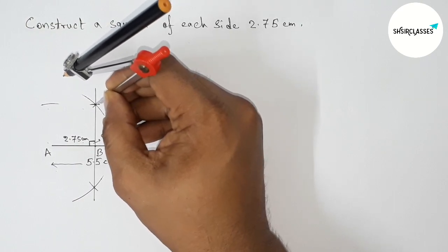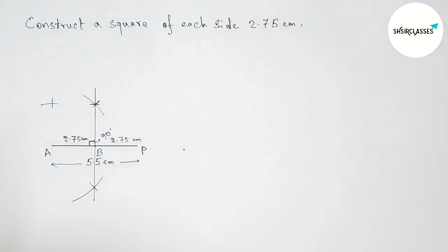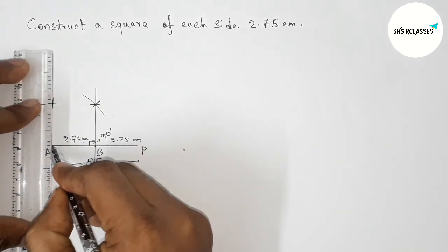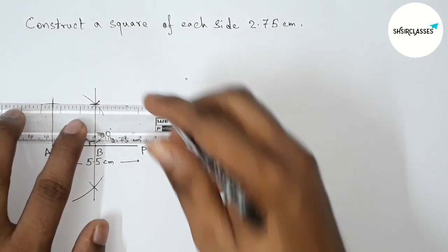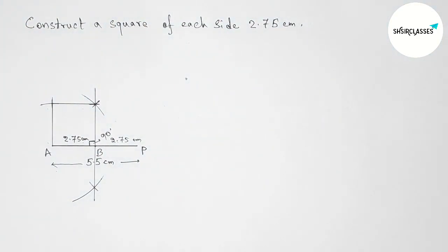And putting the compass here and cut here. So now first joining this side, then joining this side.